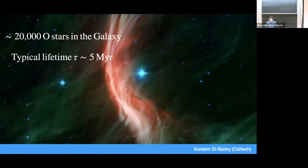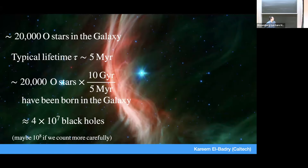To get a rough estimate of how many black holes there should be in the Milky Way, we take the number of O stars we see today and multiply by the ratio of their lifetime to the age of the galaxy. We get something like 2×10^7 black holes in the Milky Way. It's a pretty uncertain number — we don't know exactly which stars become black holes versus leaving neutron stars, and the star formation rate has varied — but it should be in this ballpark.